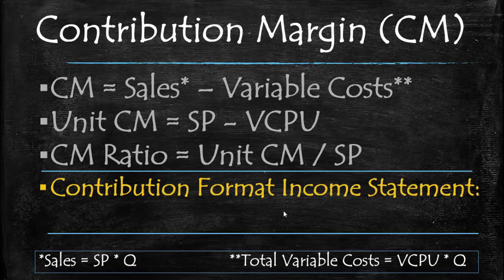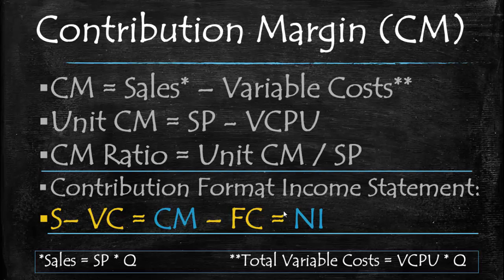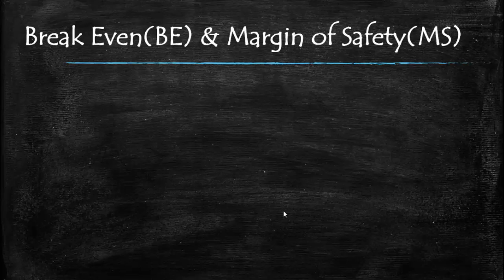That introduces the contribution format income statement. This statement divides costs based on behavior: we start with sales, subtract variable costs to get contribution margin, then subtract fixed costs to yield net income. The contribution format income statement is used typically by management personnel.